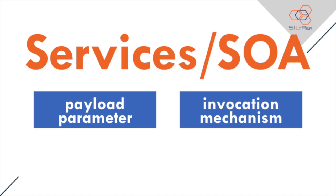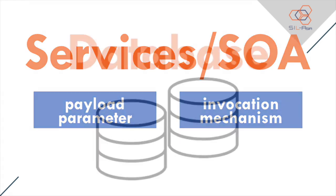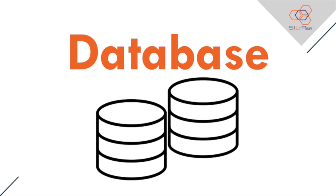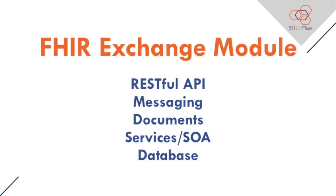Another exchange framework is using FHIR in a framework that may be developed by implementers to move resources as a service, like in a service-oriented architecture. Resources in a service-oriented implementation can serve either as a payload parameter specifying information flowing into or out of a service, or in a behavioral sense using FHIR APIs as the invocation mechanism. Another way is to store resources defined by FHIR in a database where different applications or modules transact with it. FHIR makes it easy with these common standardized exchange methods.